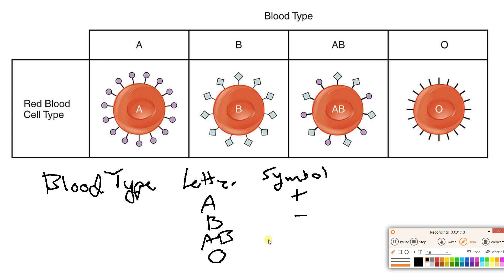What I want to do first is talk about the letter of the blood type. But real quick — why is blood type even important? Well, if you have to get blood from someone, it's really important that you have the same blood type. If you get a blood donation of a different blood type, your immune system will see that new blood as being foreign and start to attack and kill those red blood cells. And that can have drastic, even fatal consequences.